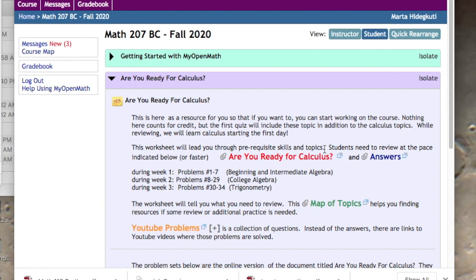So this is what I would say. Any questions about the review? Okay. So week one, algebra one and two. Week two, college algebra. Week three, trigonometry. You can go faster, just not slower.